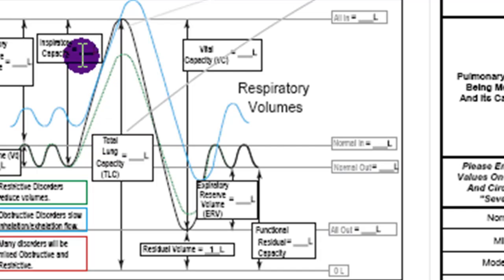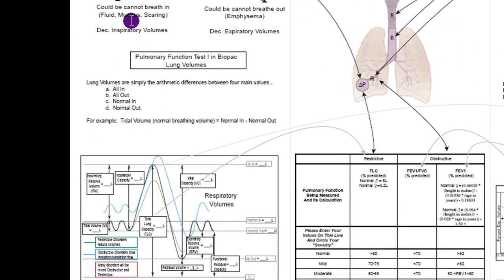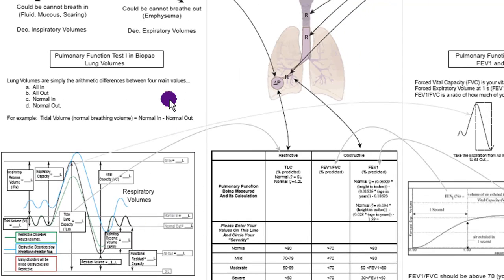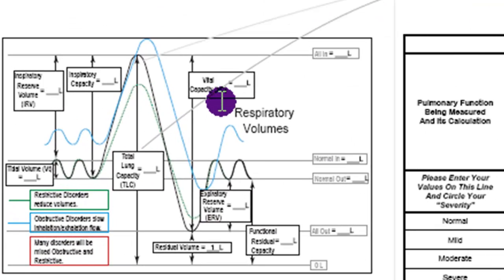For example, inspiratory capacity is the difference between all-in and normal-out. And that would be affected in somebody who had a restrictive disorder that affected the ability of the alveolus to increase, like fluid, mucus, or scarring. Expiratory volumes are down here. The main one is expiratory reserve volume, and that's the difference between normal-out and all-out. And again, that's one that's going to be affected in emphysema.